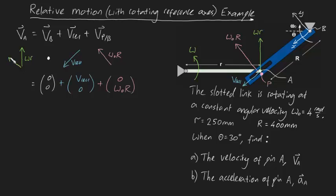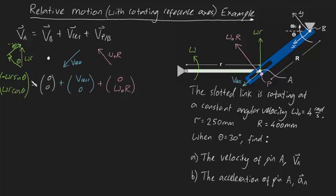Drawing the components of V_A: the j component and the i component form a right triangle. We know one angle is 90 degrees, and from the geometry this angle must equal theta, making the other angle 90 minus theta. So the i component of V_A is negative omega·R·sin(theta) — negative because x is defined downwards — and the j component is plus omega·R·cos(theta). We've now deconstructed V_A along our relative axes.